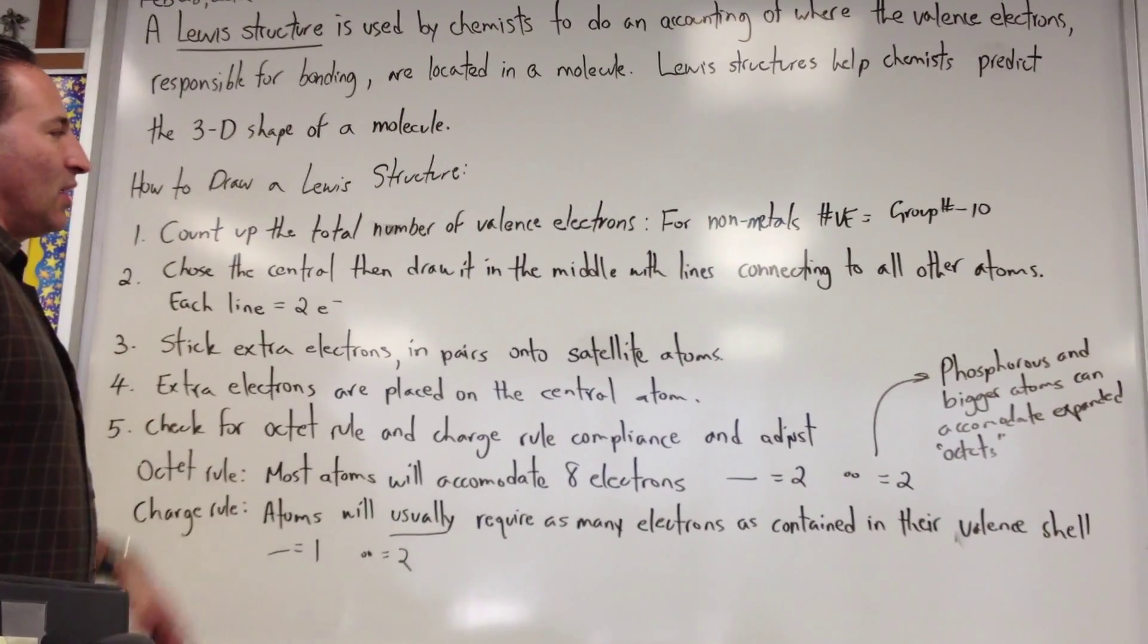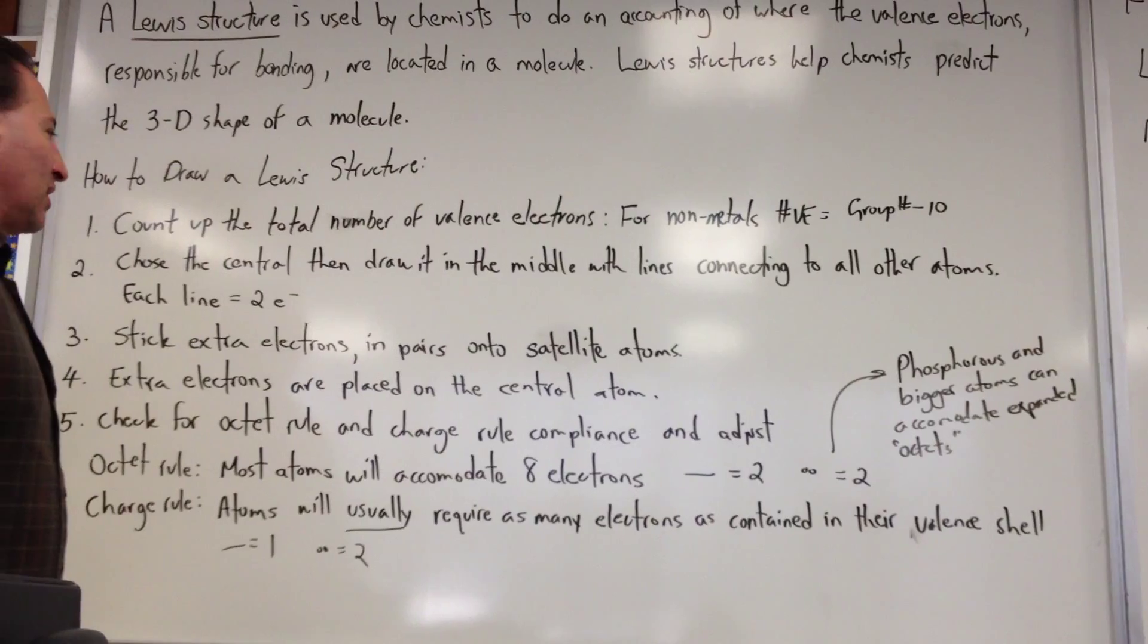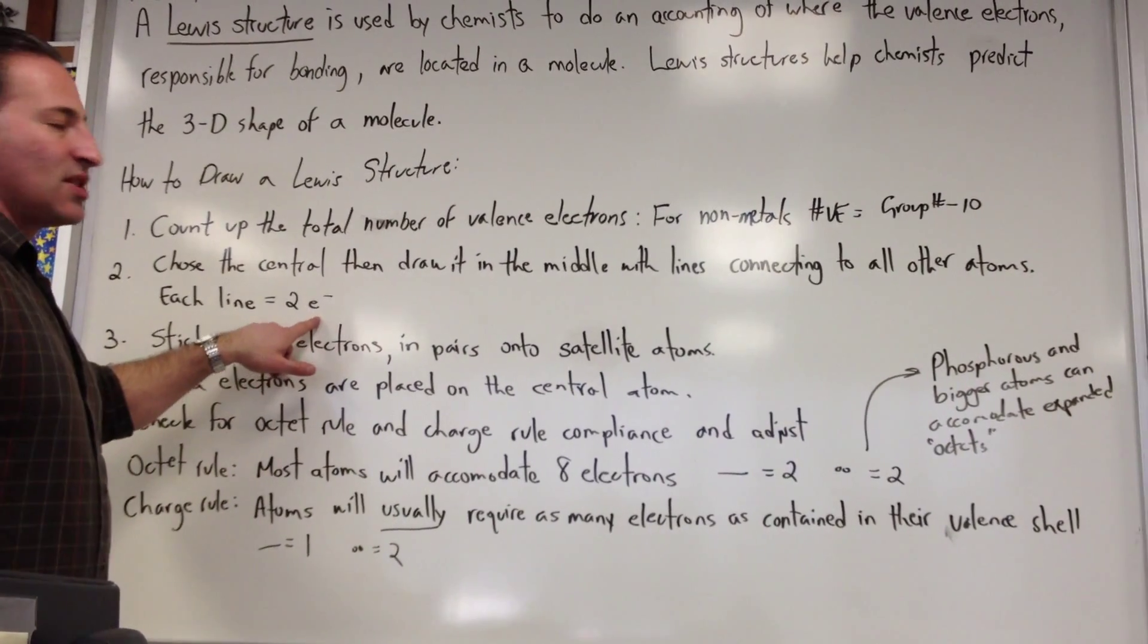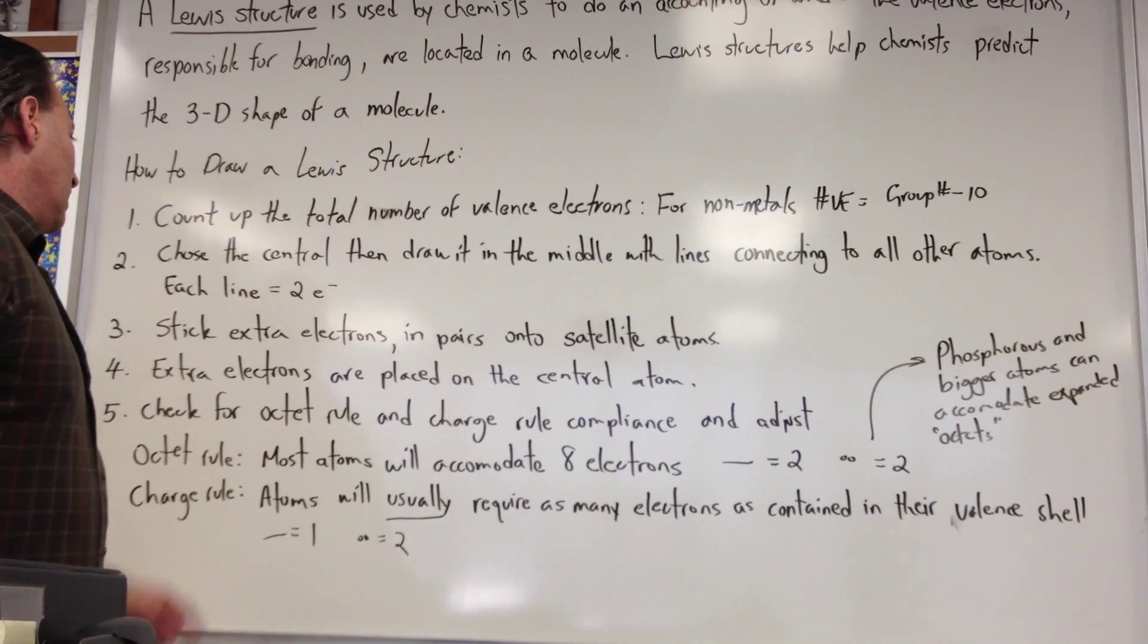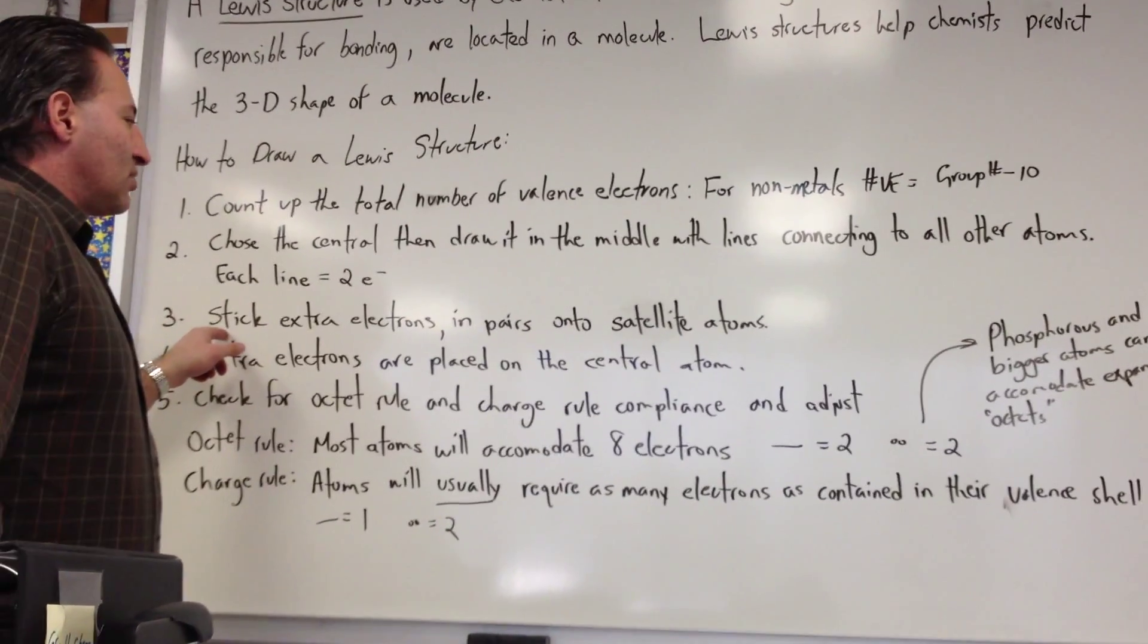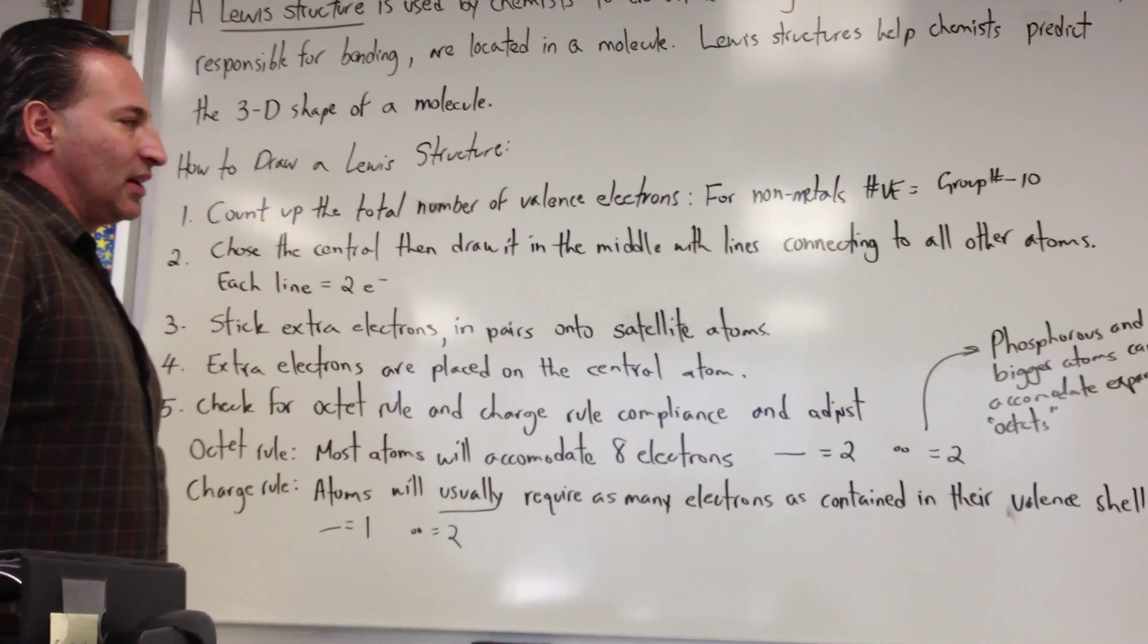Number 2, choose the central atom, then draw it in the middle with lines connecting to all the other atoms. Each line uses up 2 electrons. Third, stick the extra electrons in pairs onto the satellite atoms.